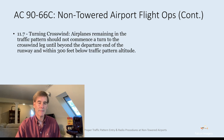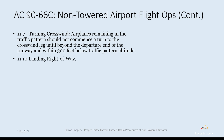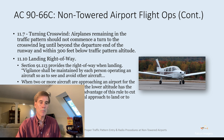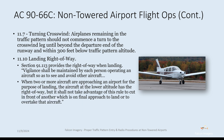Section 11.7 of the advisory circular on turning crosswind: airplanes remaining in the pattern should not commence a turn to the crosswind leg until they're past the departure end and within 300 feet below traffic pattern altitude. Section 11.10 on landing right-of-way: FAR 91.113 spells out right-of-ways when landing. When two or more aircraft are approaching for landing, the aircraft at lower altitude has the right-of-way but shall not cut in front of another aircraft on final approach or overtake that aircraft.